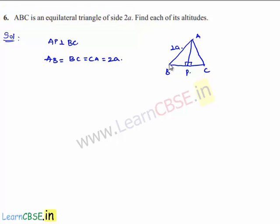In right triangle APB, we have 2a and we need to find BP. If you are able to find BP, then it is easy to find the AP length by using the Pythagoras theorem.